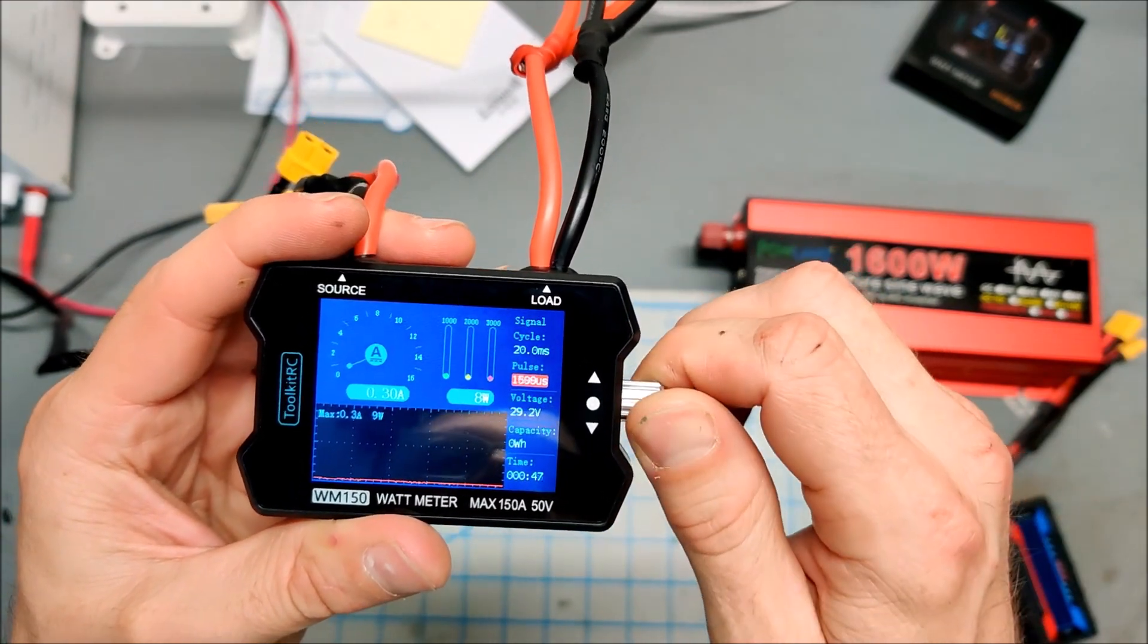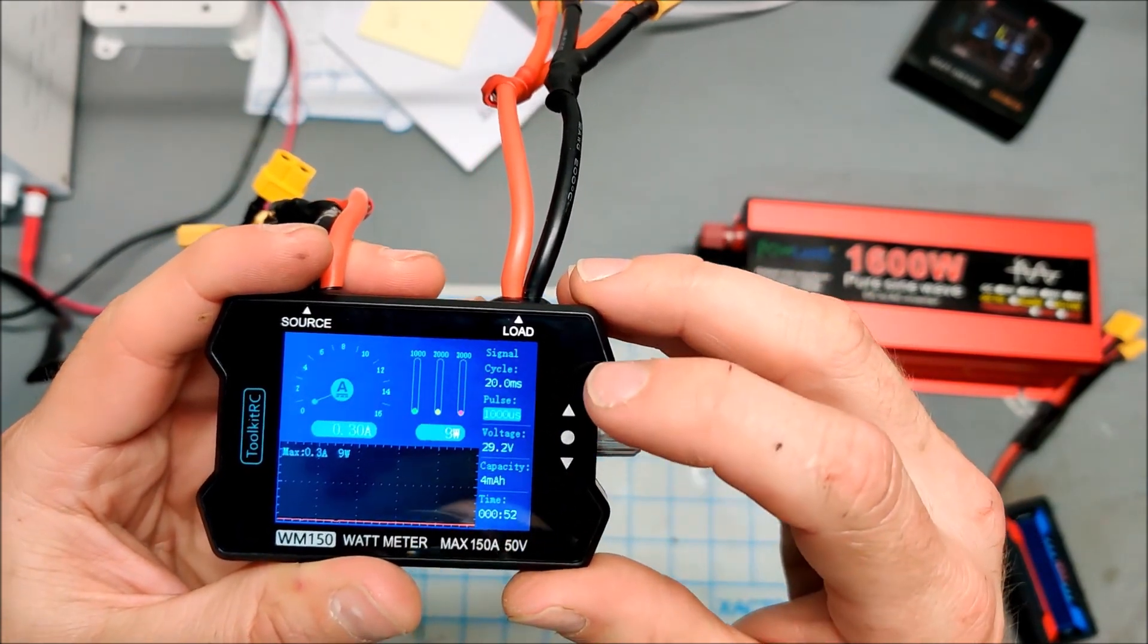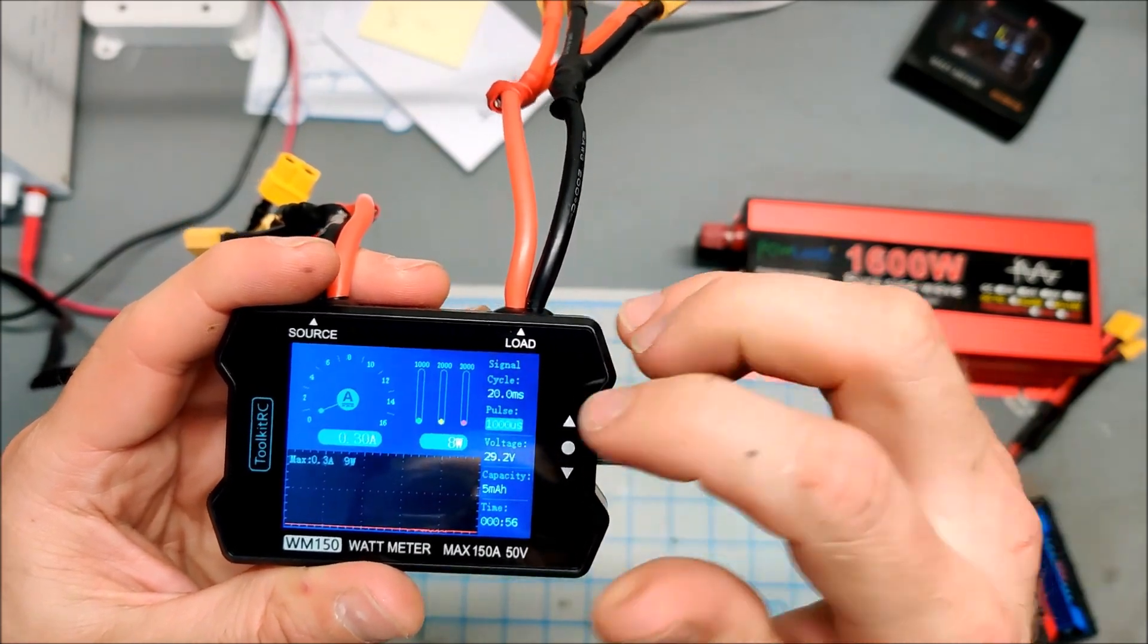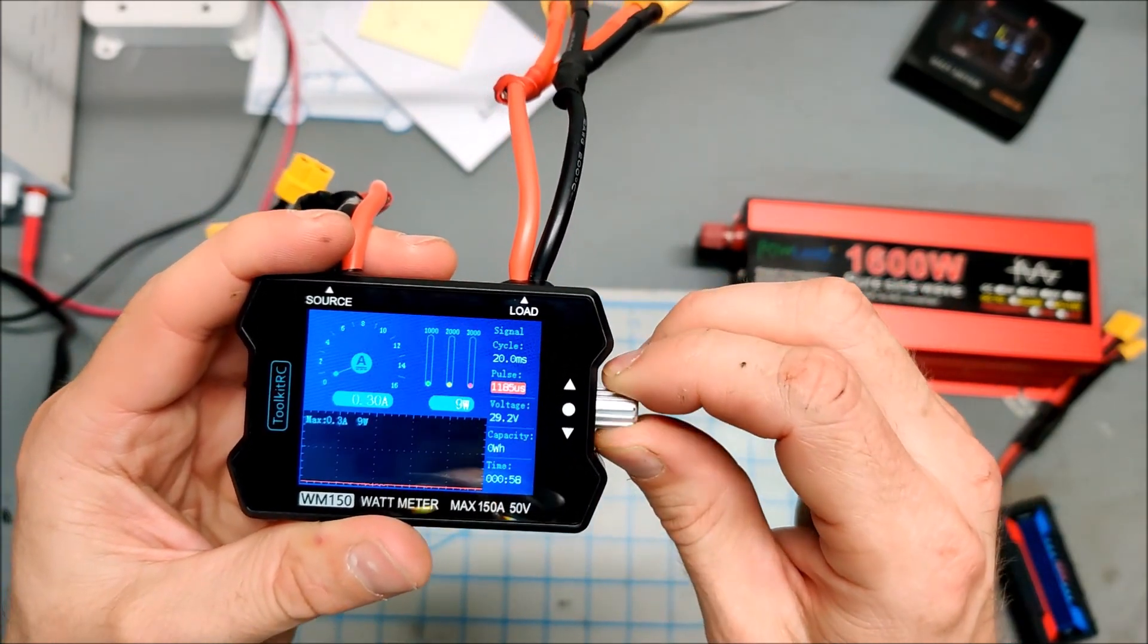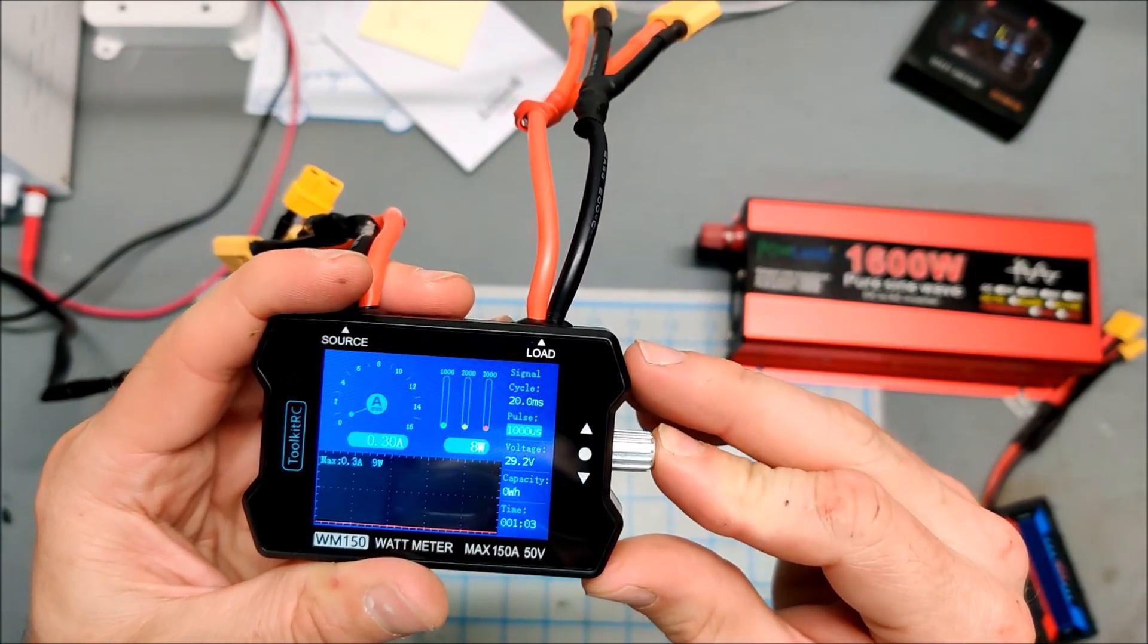This jog wheel here can also control servos. This is the servo pulse control. You can see it's changing the pulse control for the servo, but we don't care about that. Now let me press in the button.